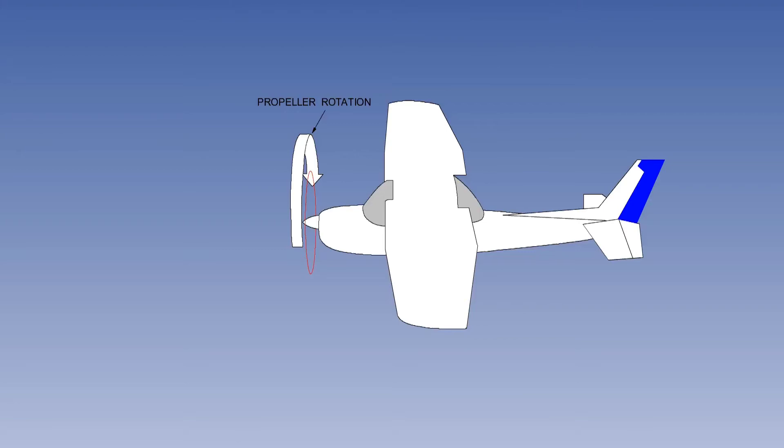The propeller on the majority of aircraft rotates clockwise when viewed from the rear. Therefore, the prop wash will also rotate clockwise and approach the fin from the left. This generates a left yawing moment. The left yawing moment from the propeller slipstream is balanced by an application of right rudder from the pilot.